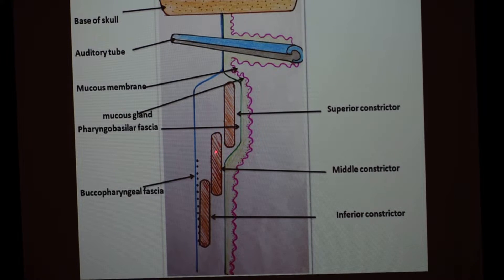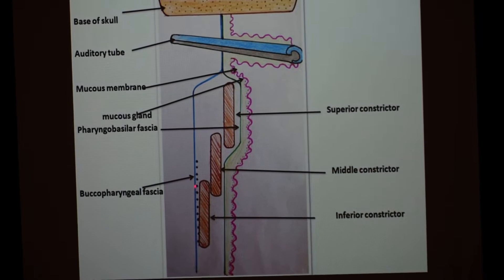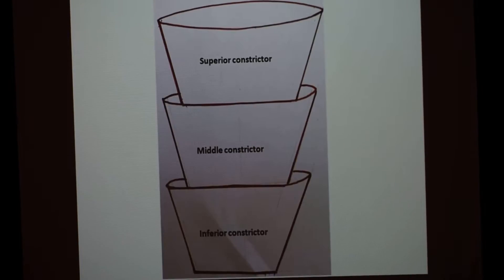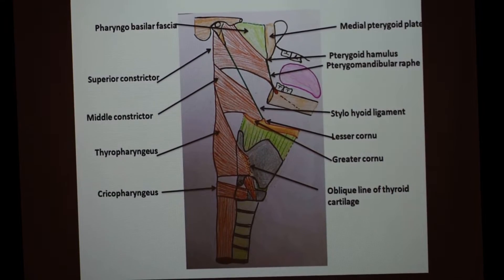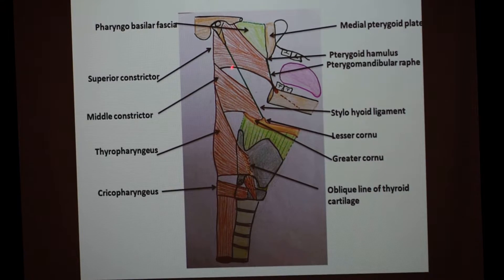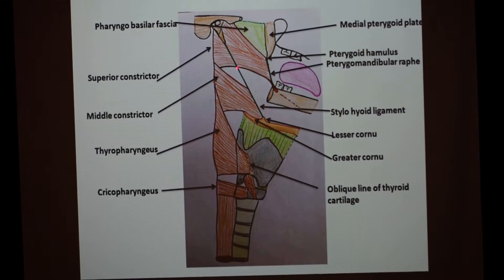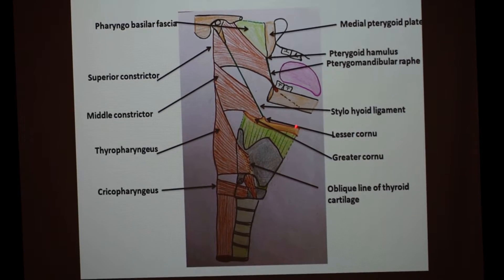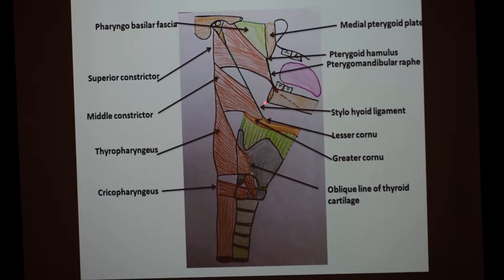Now in detail we will discuss the constrictor muscles as well as the longitudinal muscles. This diagram is a lateral view of the pharynx and trachea. We will focus on the pharyngeal structure and discuss the circular or constrictor muscles, covering their origin, insertion, action, and nerve supply. First, we locate the three constrictor muscles from above downward.